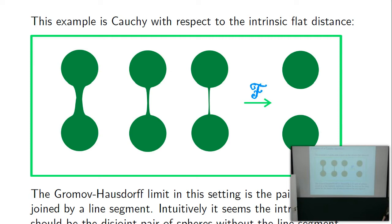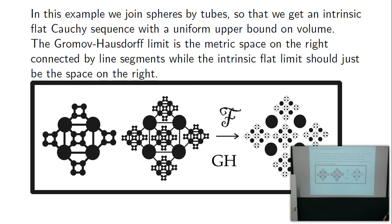You can have sequences converting to something countably rectifiable — this illustrates what countably rectifiable means: covered by countably many Lipschitz charts. That's how it can be countably disconnected, but not more than countably, which is nice. The Gromov-Hausdorff limit includes line segments between everything; the flat limit can be something like a Cantor set of disjoint spheres with the metric as if there were line segments between them.